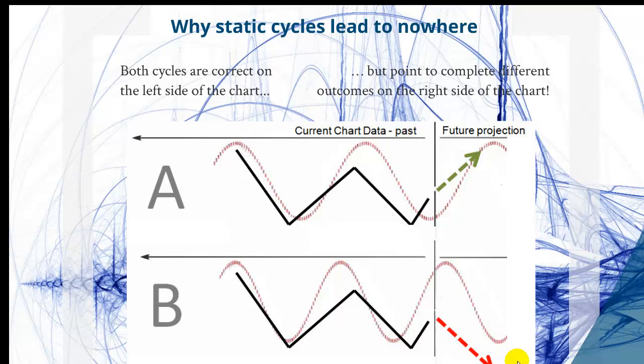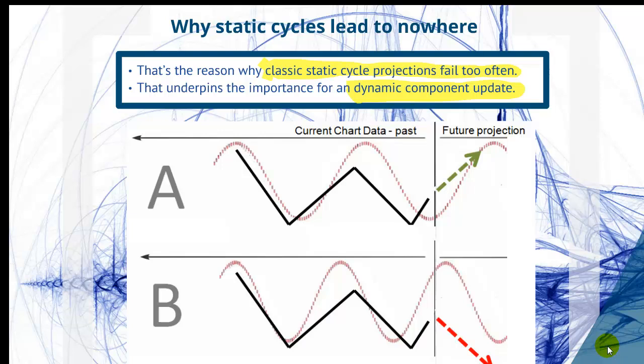On the left chart, we clearly have quite similar cycles detected, which is the same dominant cycle. But if you move over to the right side to our projection for trading, we get quite different projections. This is exactly the reason why classic static cycle projections fail too often.